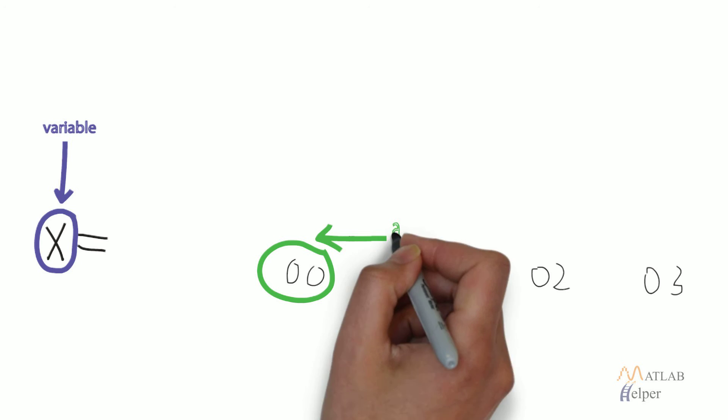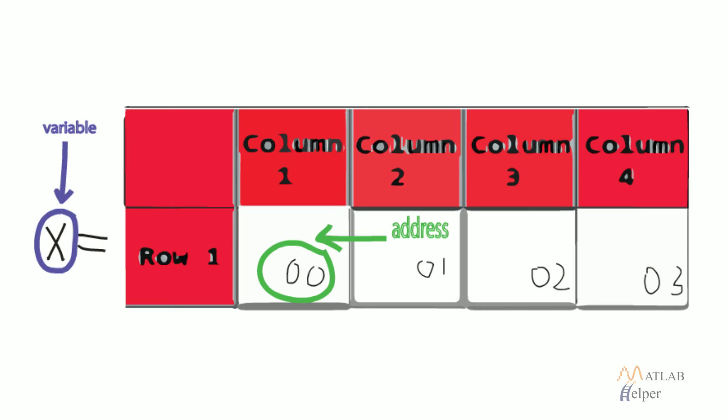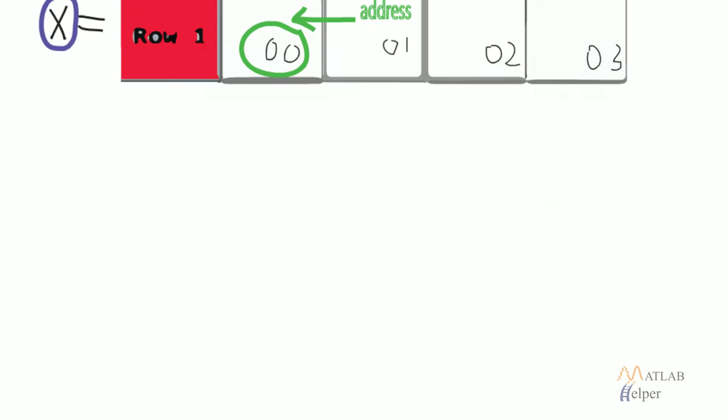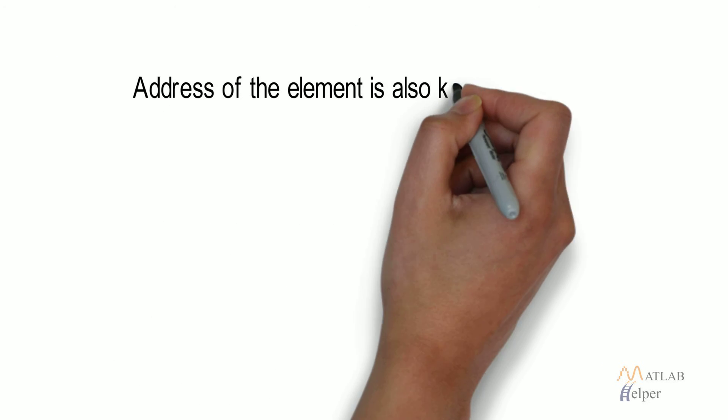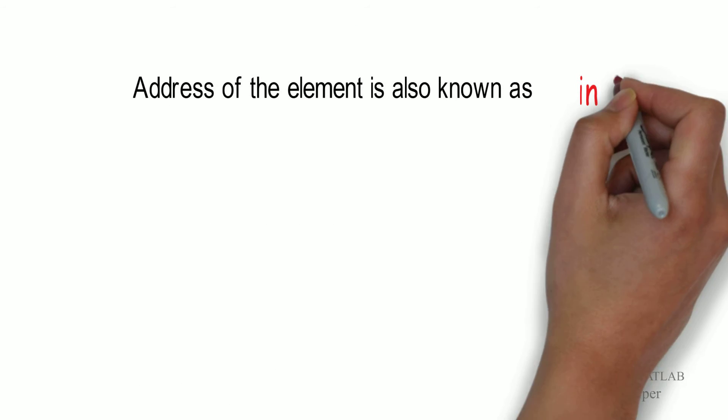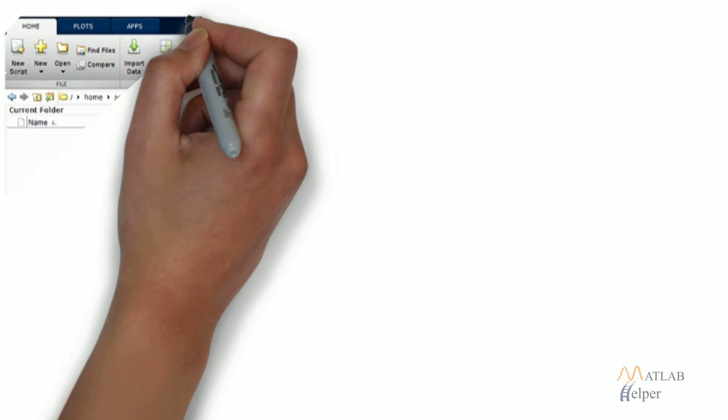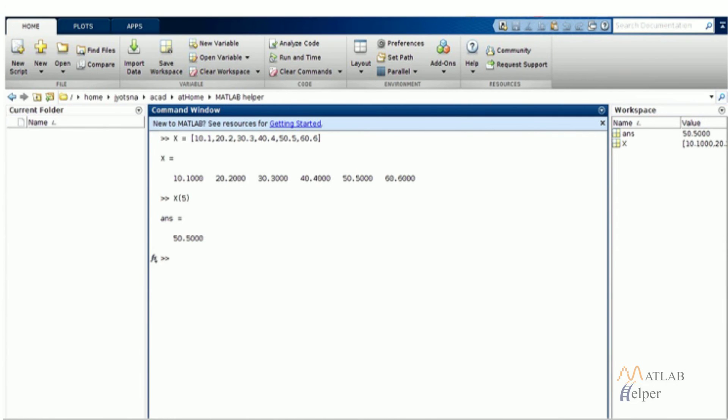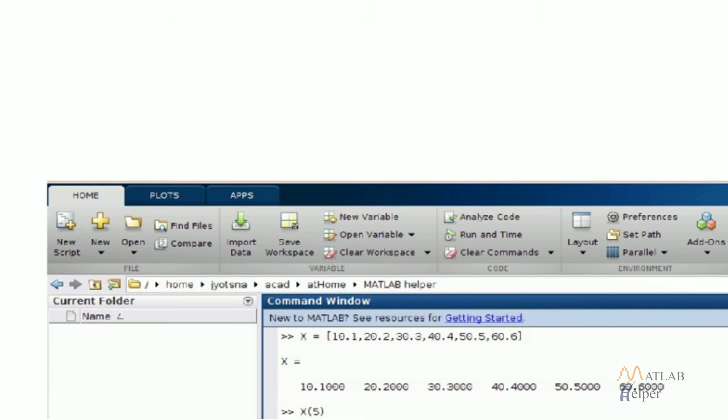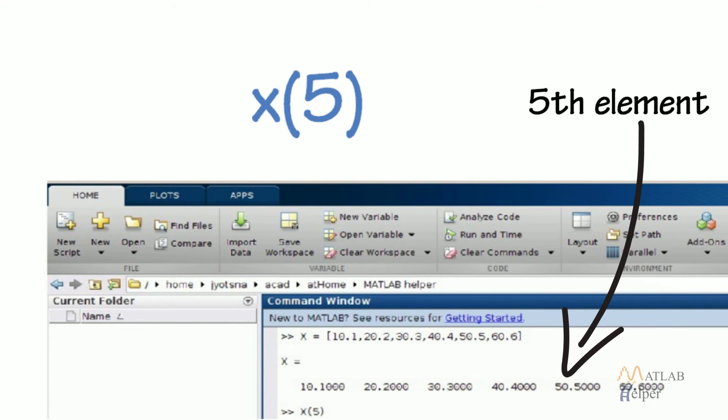Different elements of the vector can be accessed by using the variable name and the address of the particular element. Address of the element is also known as index, which means the relative positioning of the element from the beginning. In the example given in the image there is a vector of dimension 1 into 6. If we want to access the fifth element we can do so by using the index written inside closed parenthesis.